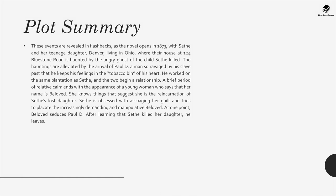These events are revealed in flashbacks as the novel opens in 1873, with Sethe and her teenage daughter Denver living in Ohio, where their house at 124 Bluestone Road is haunted by the angry ghost of the child Sethe killed. The hauntings are alleviated by the arrival of Paul D., a man so ravaged by his slave past that he keeps his feelings in the tobacco tin of his heart. He worked on the same plantation as Sethe, and the two begin a relationship. A brief period of calm ends with the appearance of a young woman who says her name is Beloved — she knows things suggesting she is the reincarnation of Sethe's lost daughter. Sethe becomes obsessed with assuaging her guilt and tries to placate the increasingly demanding Beloved, who seduces Paul D. After learning that Sethe killed her daughter, Paul D. leaves.